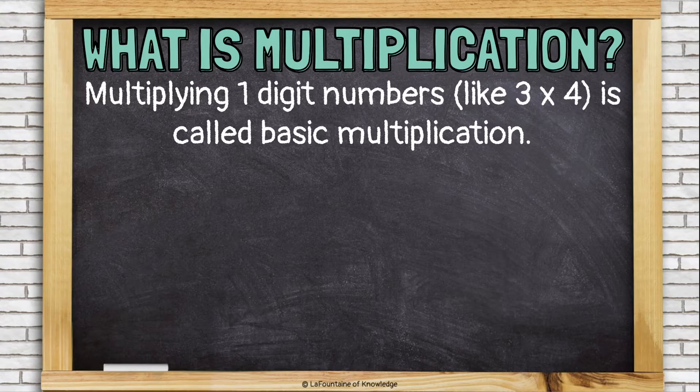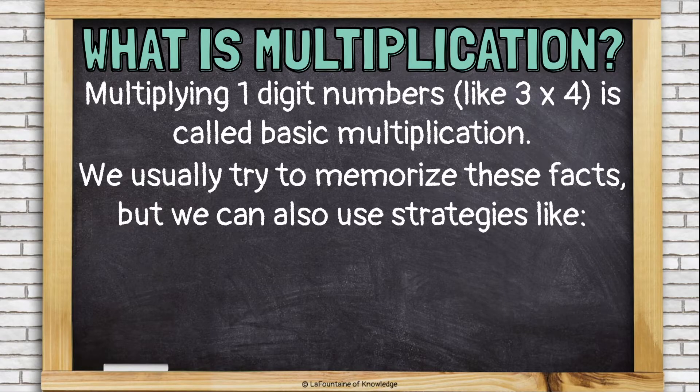Multiplying one-digit numbers, like 3 times 4, is called basic multiplication. We usually try to remember these facts,